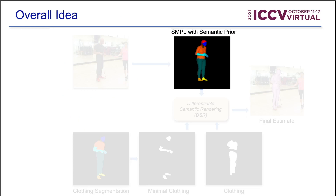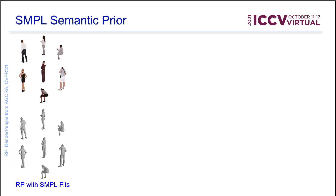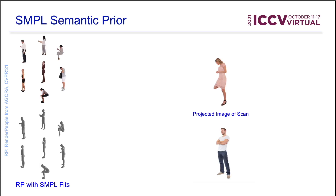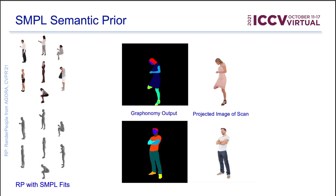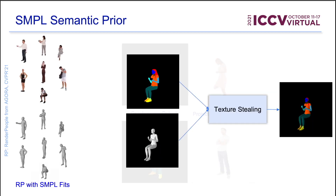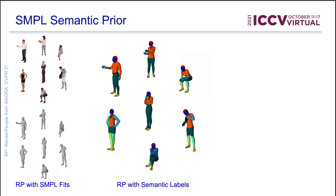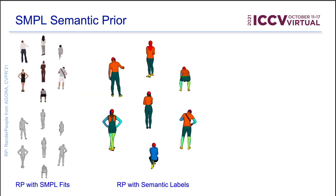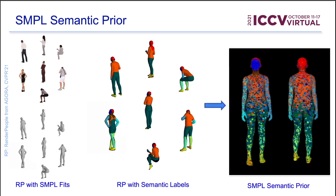For the SMPL semantic prior, we use SMPL fits of thousands of rendered people scanned from the Agora dataset. Given a projected image of a scan, we run Graphonomy to get clothing segmentation. To transfer these semantics to SMPL, we use a texture stealing method to obtain which clothing label belongs to which vertex. We repeat this process for thousands of scans with a variety of pose, shape, and camera views. Finally, we use this information to compute the SMPL semantic prior. For more information, please refer to the paper.